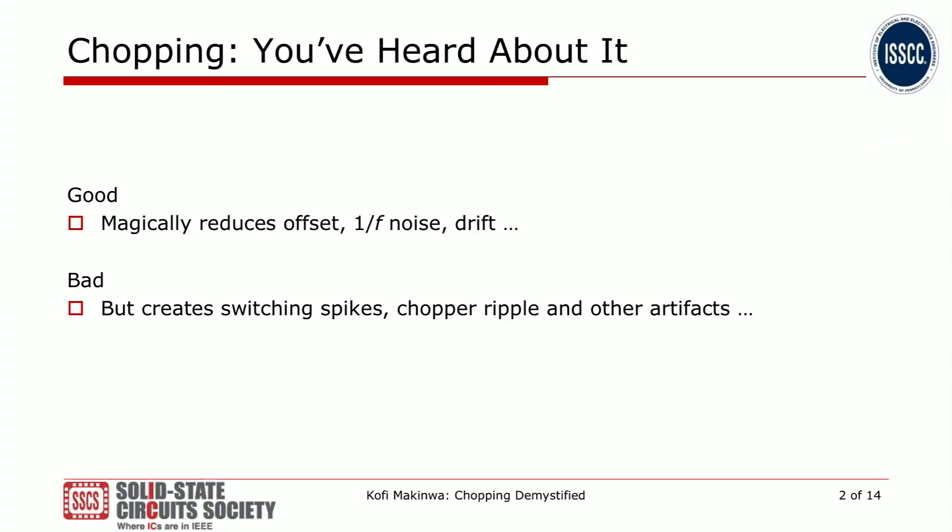Chopping is a technique that's used a lot in analog circuits these days. You may have heard some good stuff, like its almost magical ability to reduce offset, 1/f noise and drift. But you probably have also heard some bad stuff about the way it creates switching spikes, chopper ripple and other kinds of unwanted artifacts. The aim of this talk is to bring you up to speed with chopping and help you understand how it works, and in particular about its pros and cons.